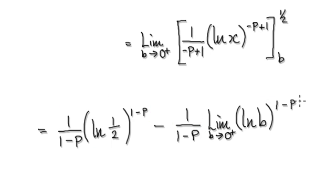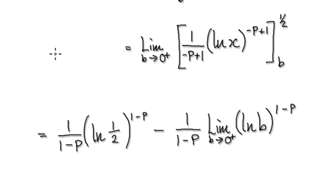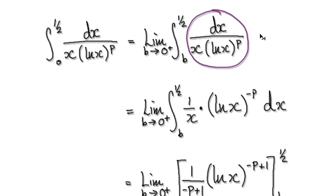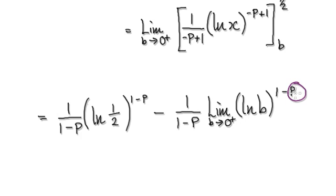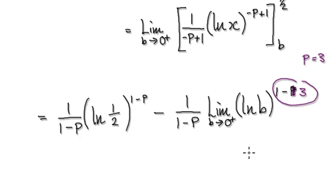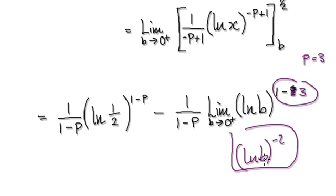Suppose P is a positive number — let's say P equals 3. So this thing here is going to be 3, and 1 take away 3 gives negative 2. So you've got the natural log of b to the power of negative 2. Whenever you see this, you can think of it as 1 over the natural log of b squared.